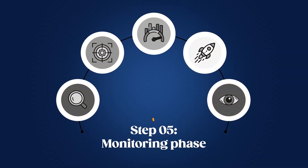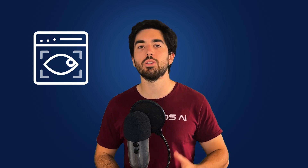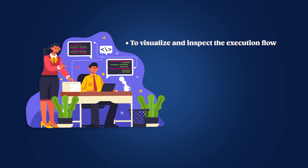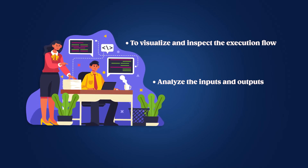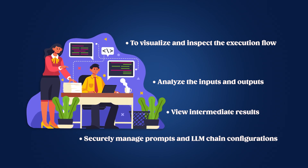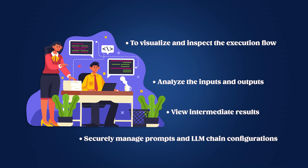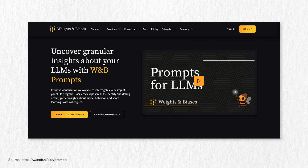If you've deployed your model and checked for all these sources of problems, congrats! The model is now live and running, but your work isn't done here. You still need to monitor how your model is performing online with new user requests. You will have bugs and unexpected behavior — that is for sure. So you need systems in place to visualize and inspect the execution flow of your LLM, analyze the inputs and outputs, view intermediate results, and securely manage prompts and LLM chain configurations. One company I personally use is Weights and Biases, and more specifically Weights and Biases Prompts, which offers a set of features for developers to do all that. Make sure to track the LLM and not let it be out there unmonitored.